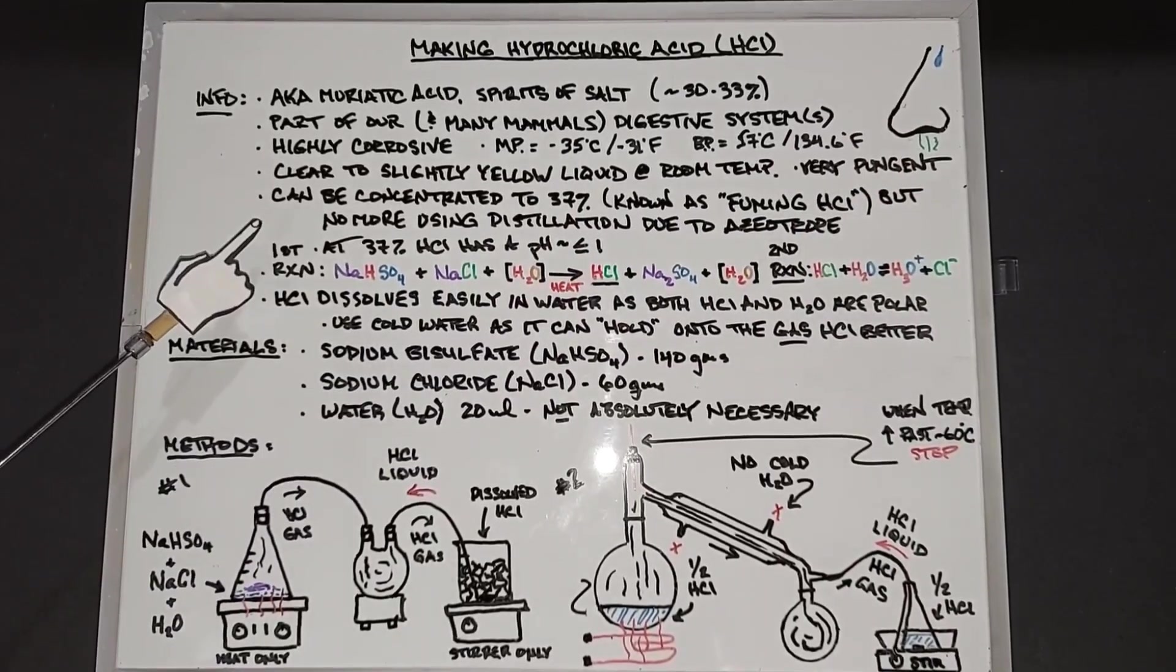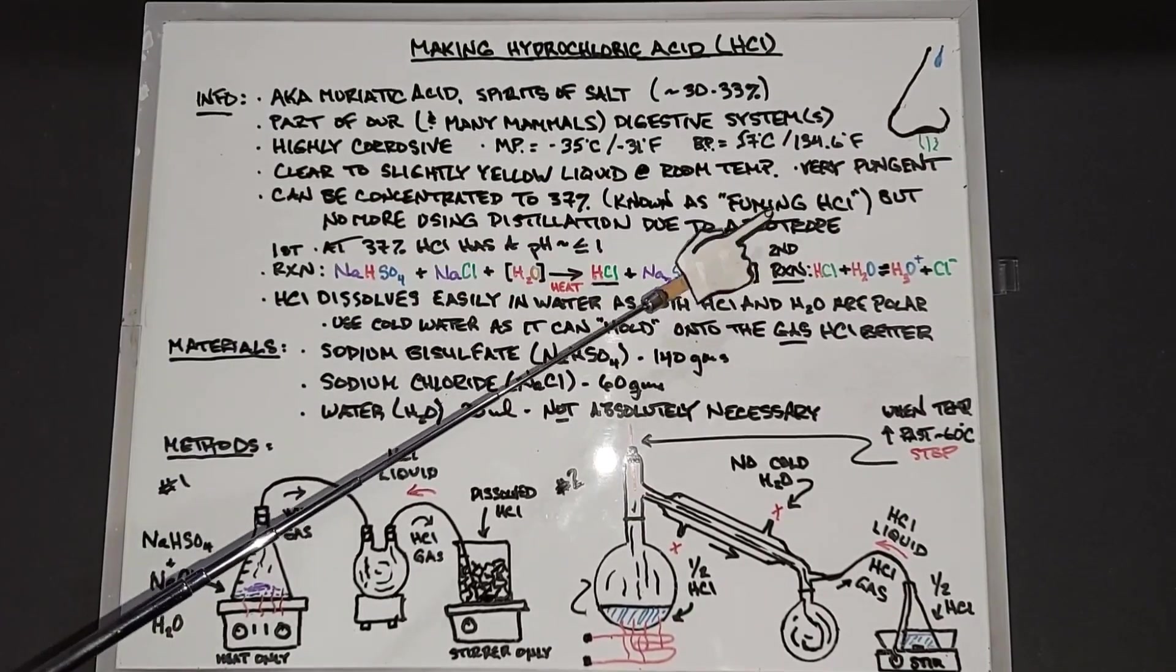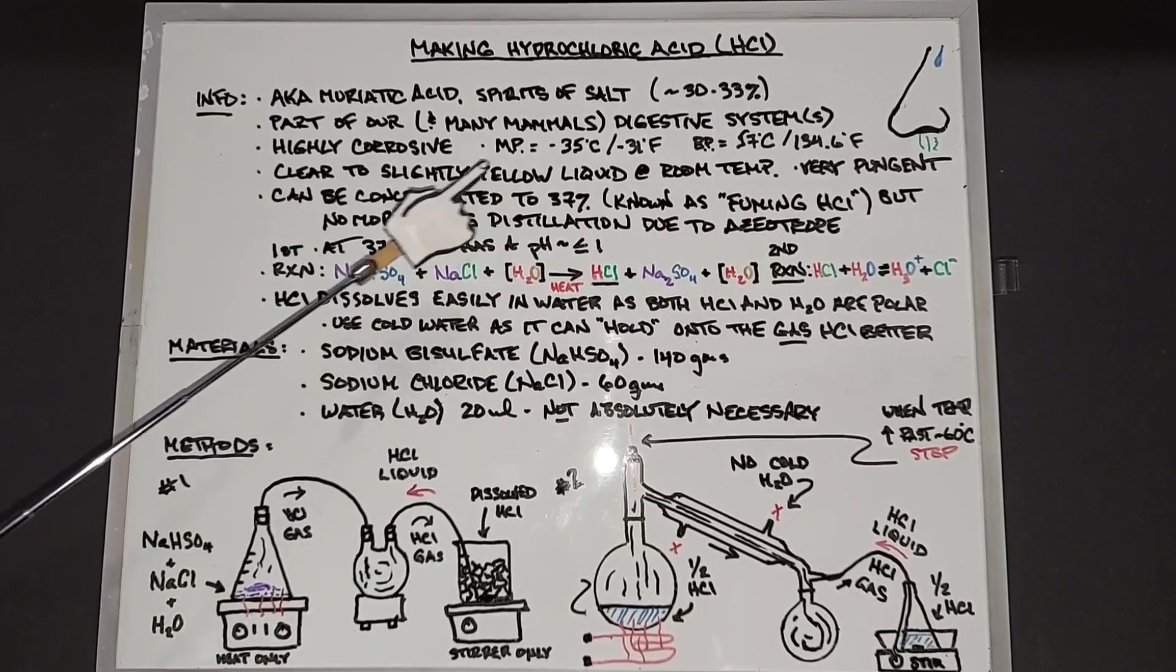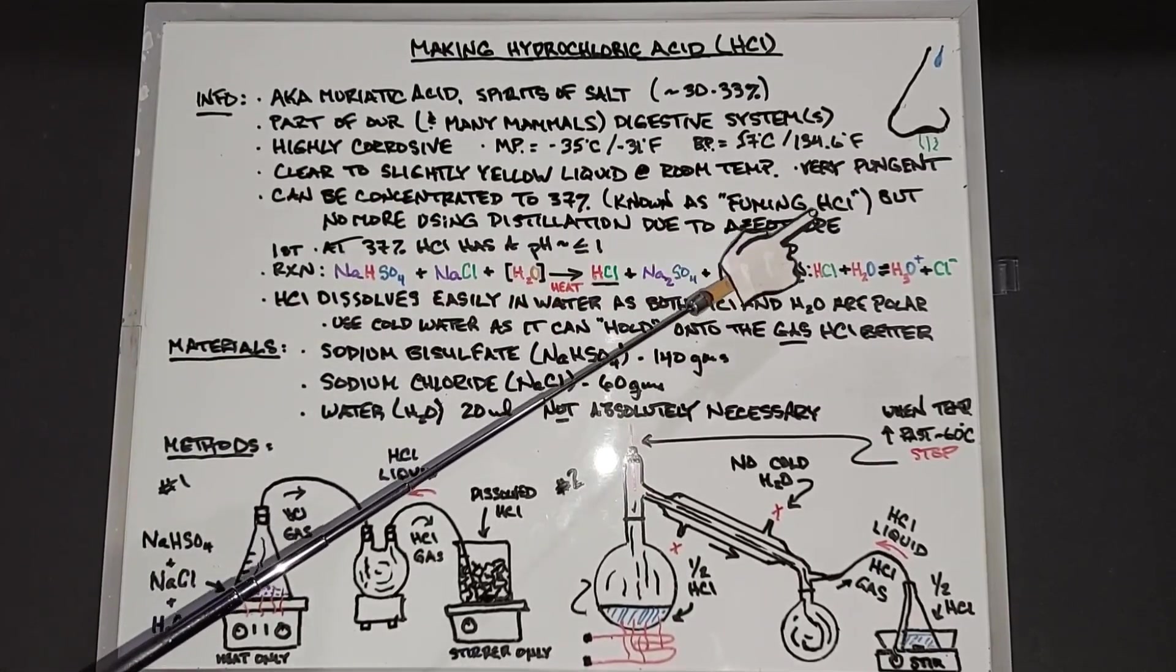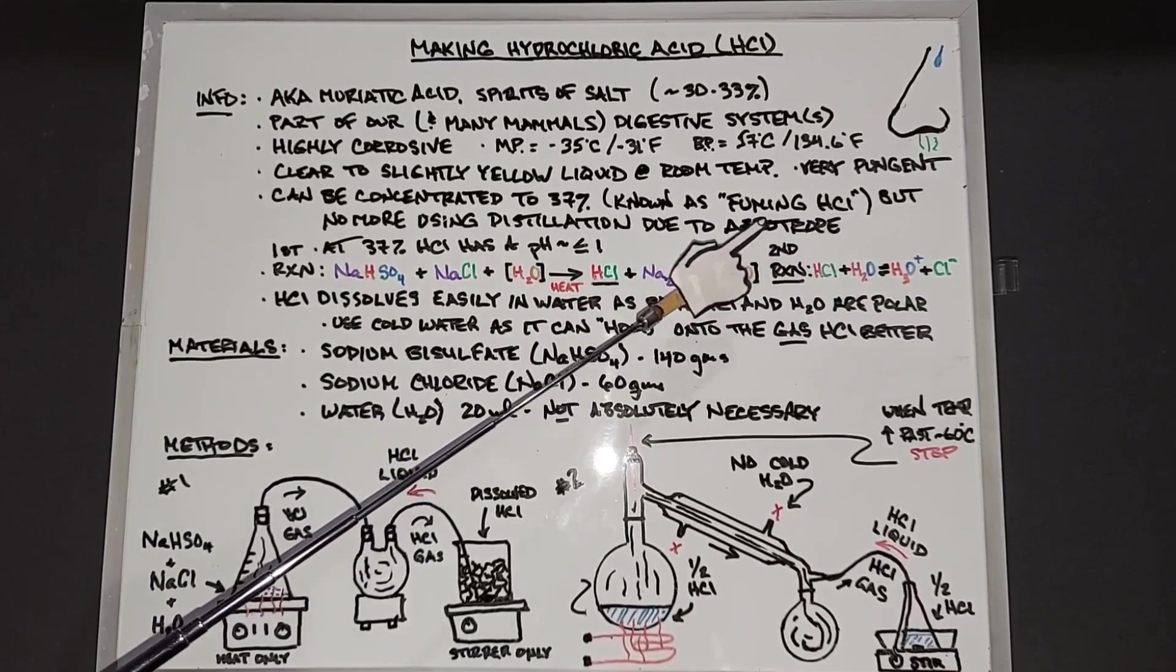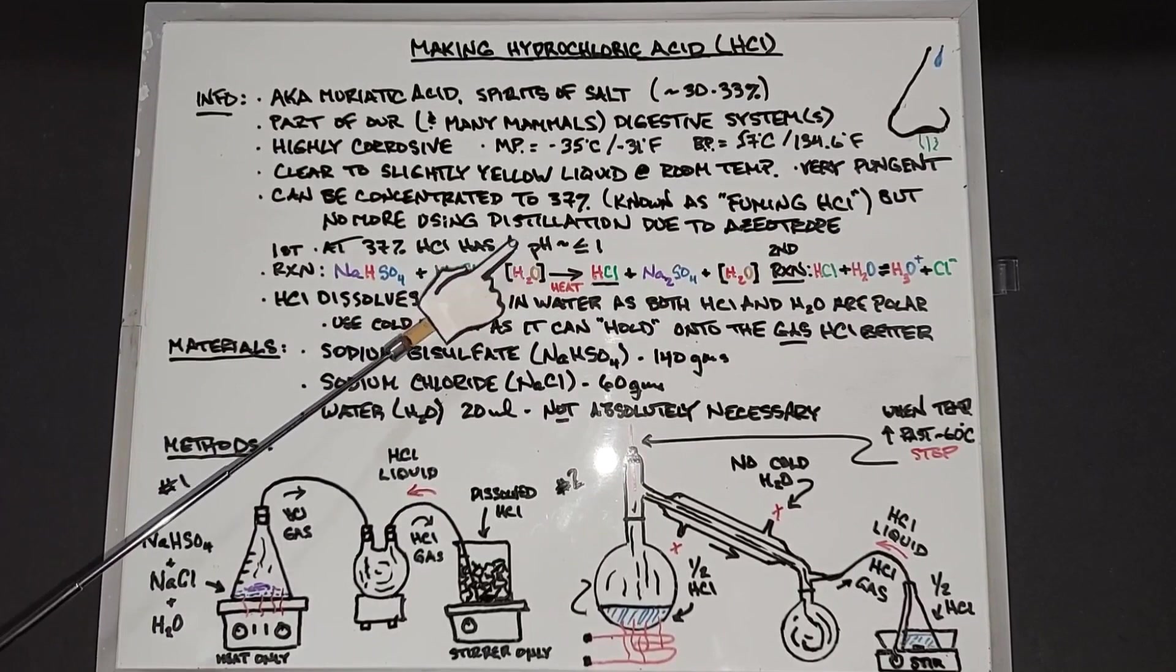Hydrochloric acid comes in these ranges but it can be concentrated to 37 percent, also known as fuming hydrochloric acid, but no more than that using plain old distillation due to the azeotrope it forms with water. At 37 percent hydrochloric acid has a pH of less than or equal to one.